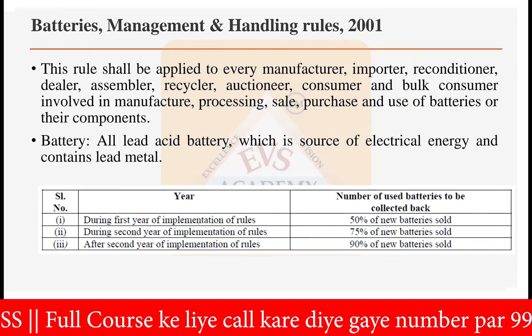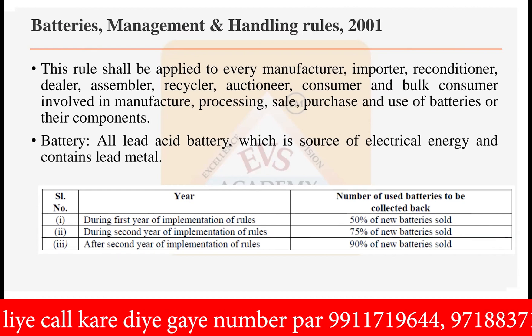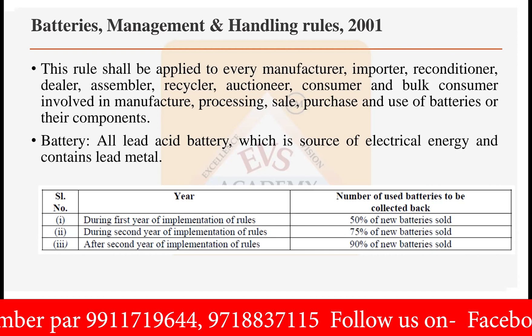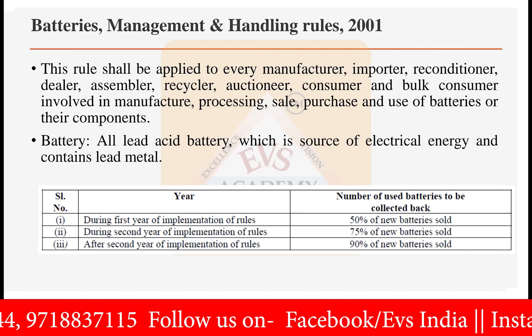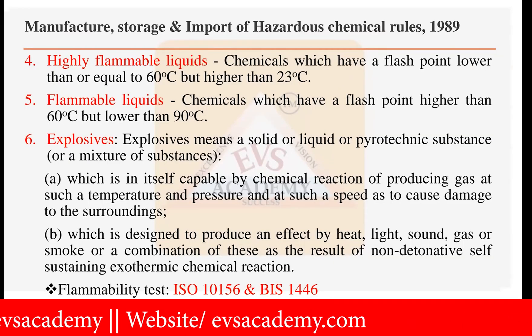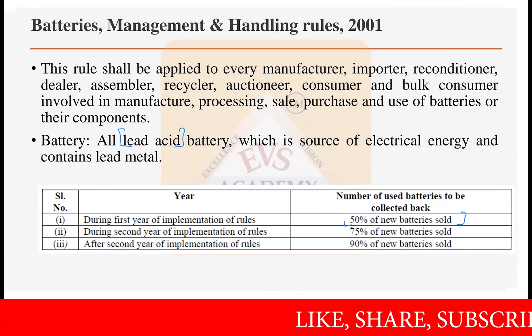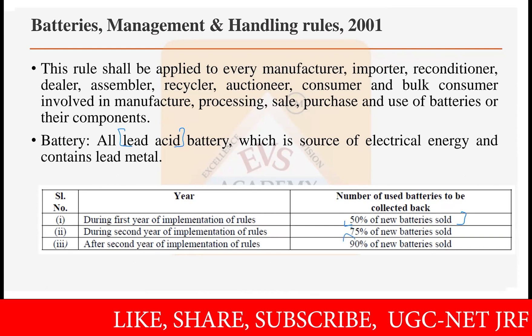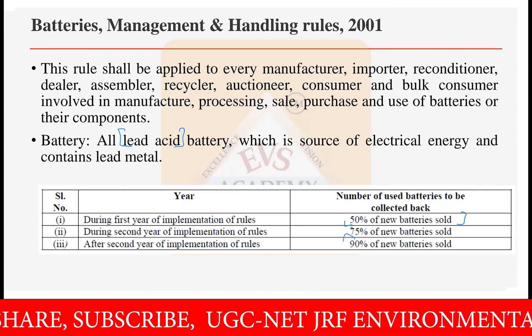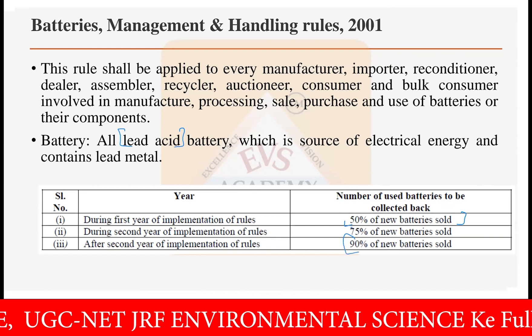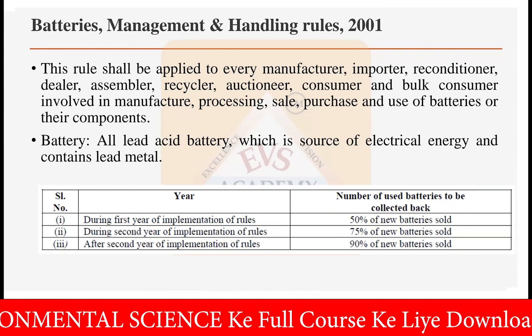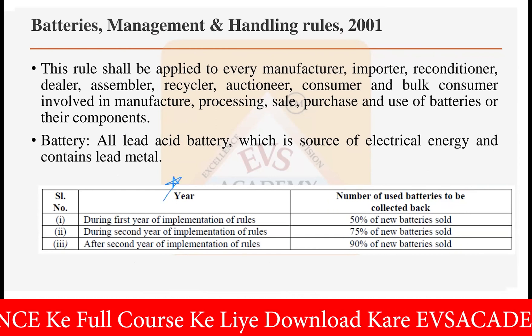Battery here refers to lead acid batteries — batteries in which lead and acid are used as a source of electrical energy containing lead metal. During the first year of implementation of the rules, 50% of new batteries sold must be collected back. During the second year, 75% of new batteries sold must be collected. After the second year, 90% of new batteries sold must be made from collected back batteries. This chart is very important to remember.